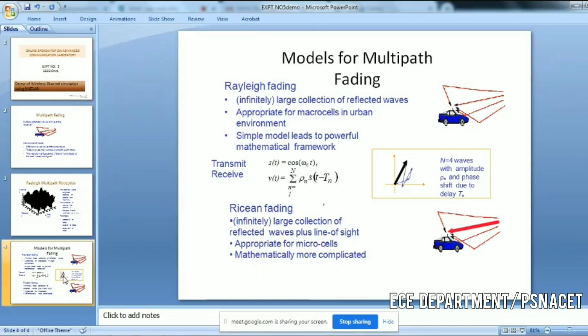In the diagram it is shown there is no line of sight signal for Rayleigh fading, but for Rician fading there will be a line of sight path present between the transmitter and receiver.